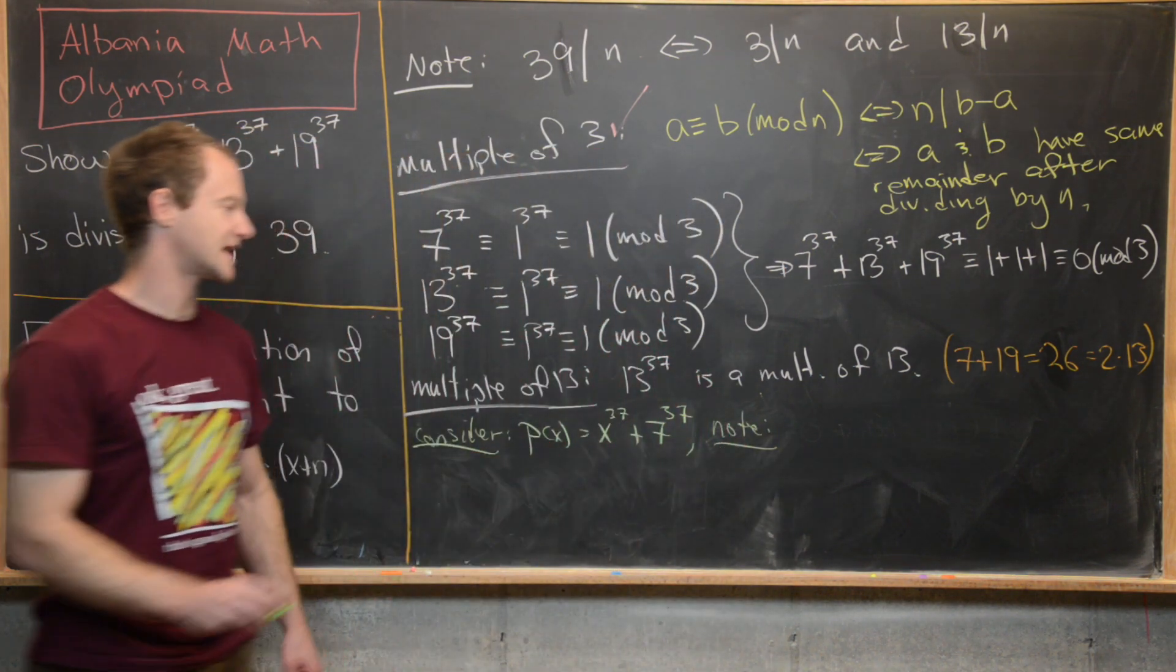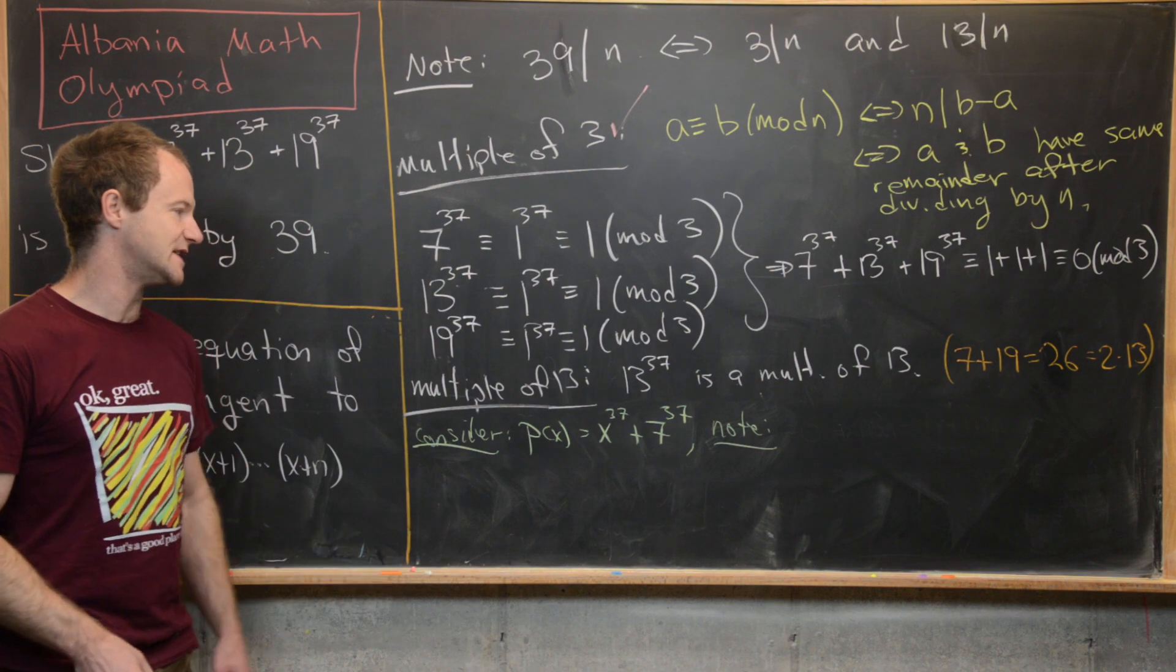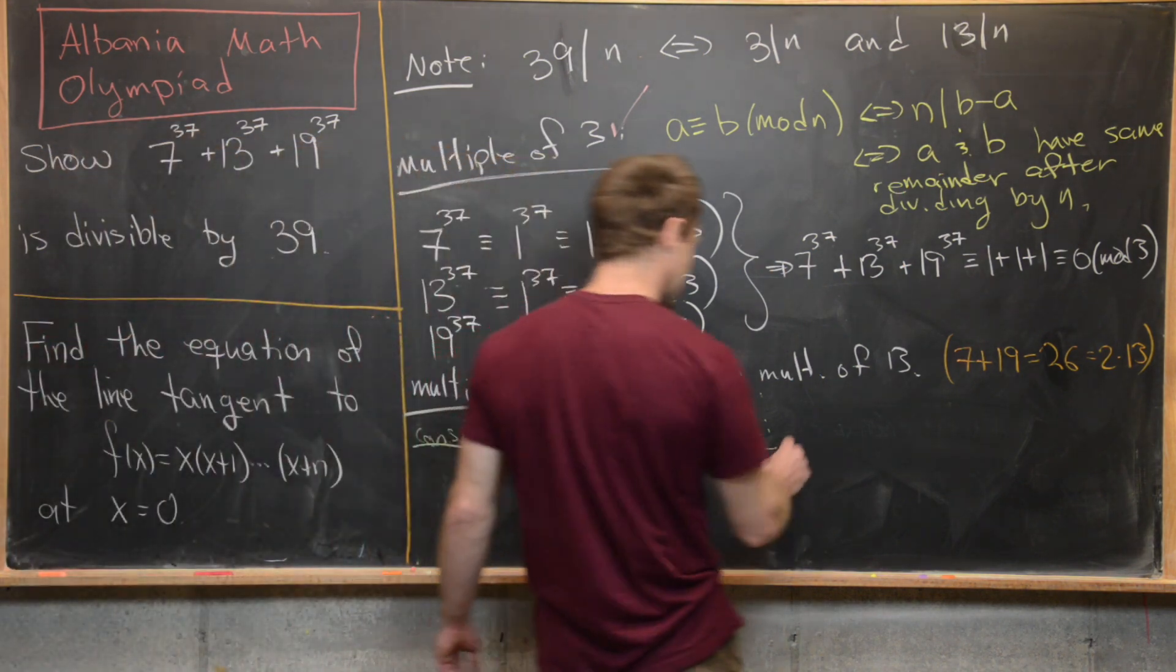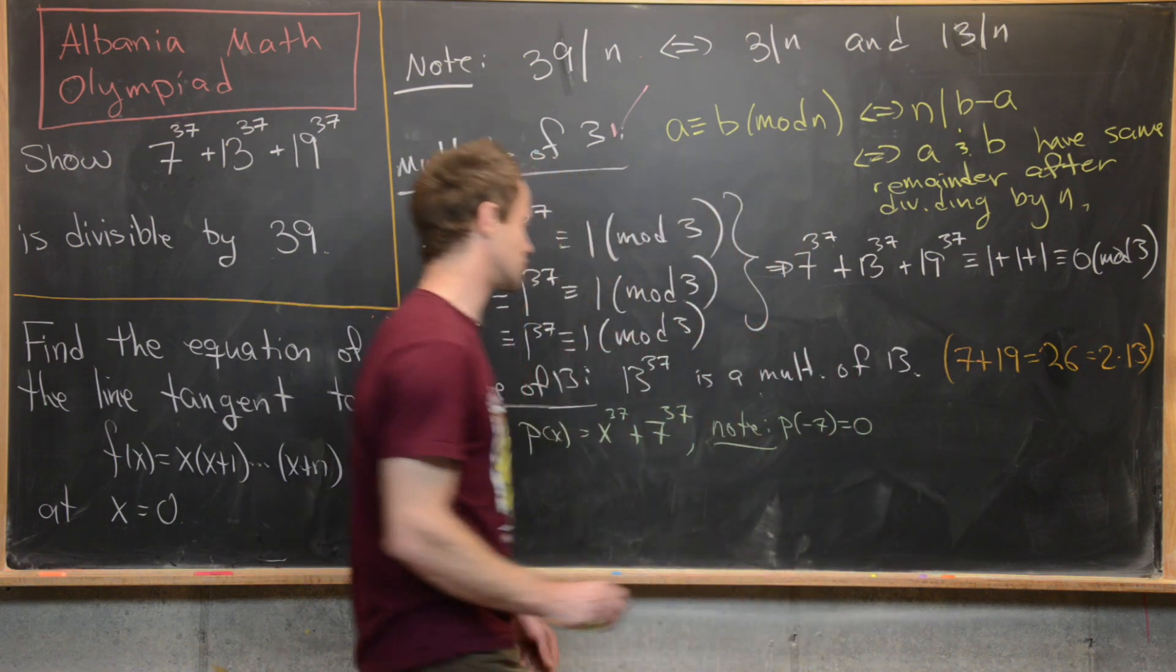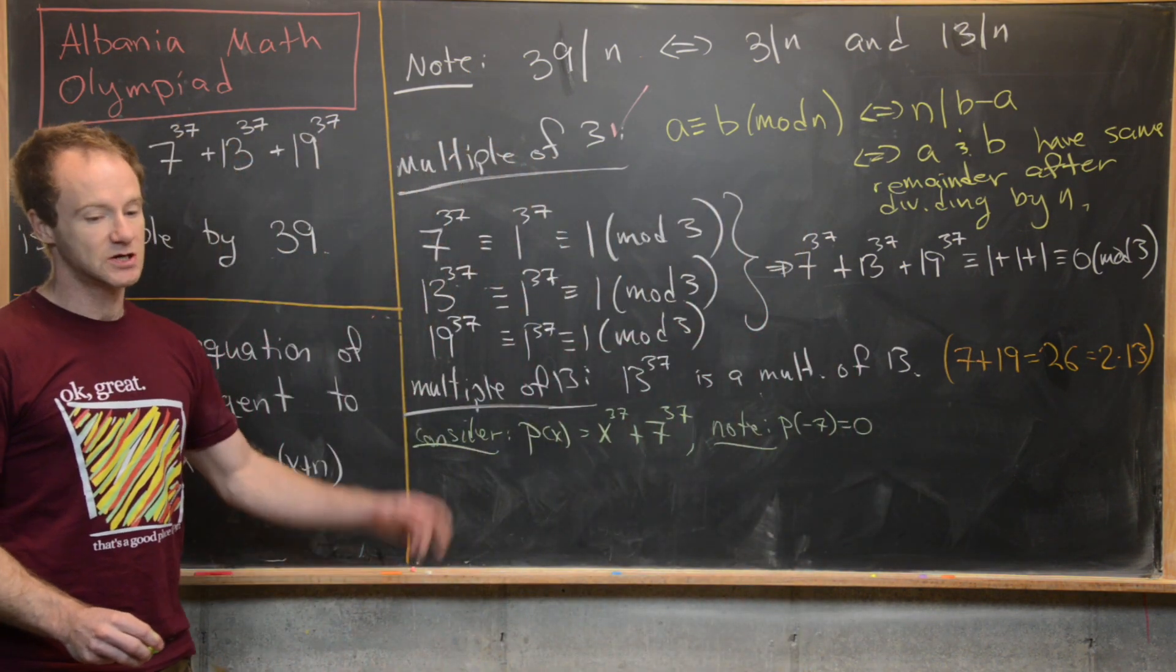And then what I want to notice is that this p(x) has a root when x is equal to negative 7. So in other words, we have p evaluated at negative 7 is equal to 0.